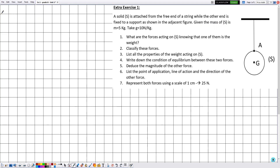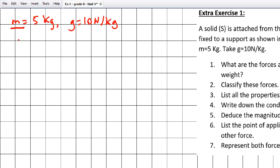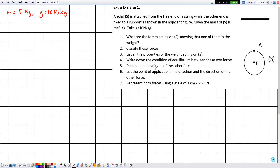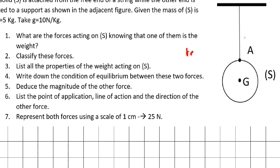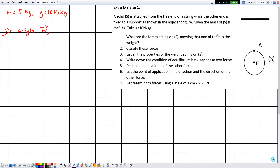Given: the mass of S is m = 5 kilograms, and g = 10 newtons per kilogram. Here m represents the mass of the object S, and g represents the gravitational acceleration or gravitational field strength. In question one, they ask what are the forces acting on S, knowing that one of them is weight. So one force is the weight, and the other force is the tension T, because whenever we have a string, we have a tension.